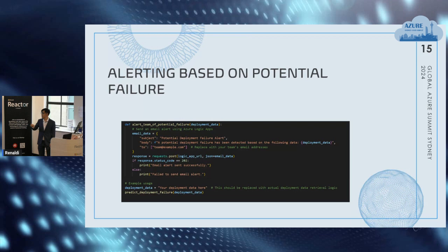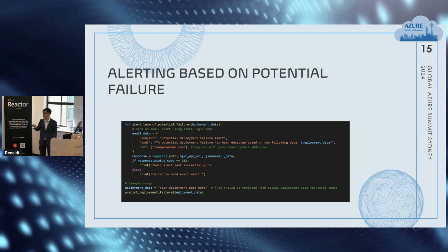The alert function replaces the email address accordingly and uses the deployment data declared there. In a production workflow, this would be fed directly from your CI/CD workflow. Based on the deployment data, we execute the predictive deployment failure function, and the email will be delivered to the specified address — showing either that the alert was sent successfully or if there was a failure in sending the email alert.